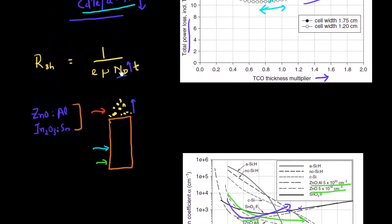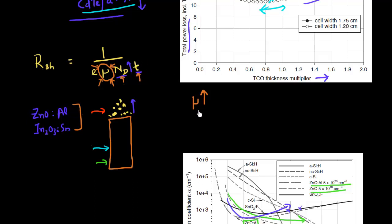The point to emphasize is that we should look at all the terms in the sheet resistance equation. There is limited play with thickness, and we can't add too much doping. Each parameter comes with limitations. The only parameter which is unbounded and on which a lot of focus in the research community is now being devoted is mobility. If I can increase the mobility of carriers in my zinc oxide or TCO material, I can live with lower doping density and lower thickness — both of which reduce absorption inside the TCO material.